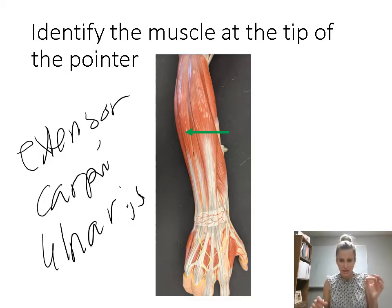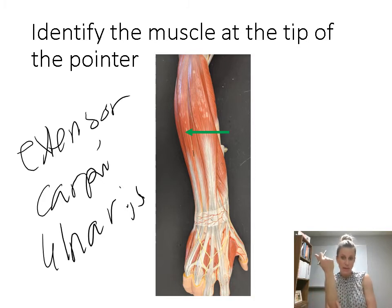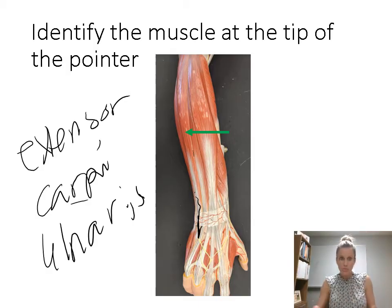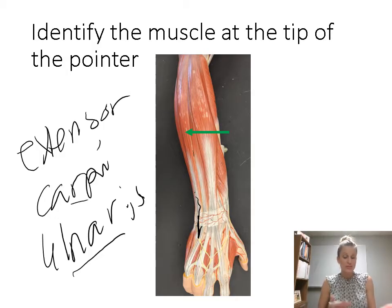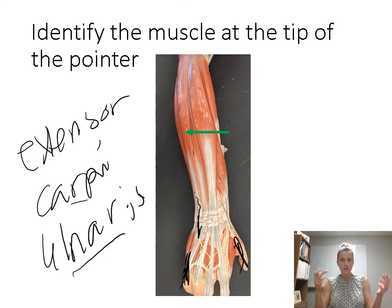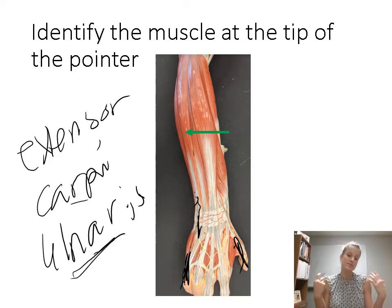This name makes complete sense: extensor, because it's in the extensor compartment at the back of the hand; carpi, because it comes down by the wrist — like carpal; ulnaris, because it's on the side of the ulna. The ulna is on the pinky side; the radius is on the thumb side. So muscles that say ulnaris are on the pinky side of the arm, and muscles that say radialis are on the thumb side.